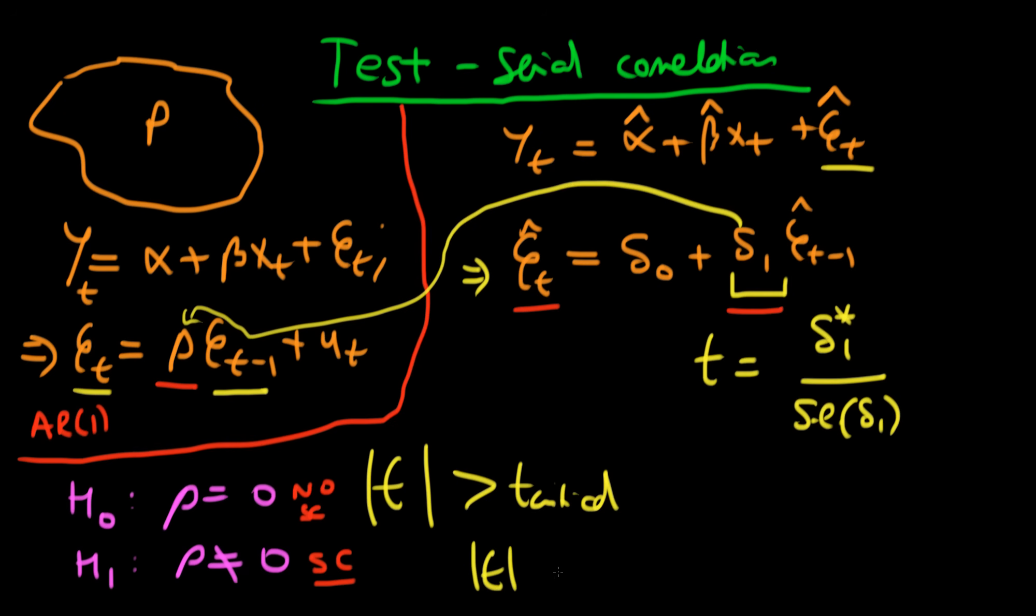If the magnitude of t is less than the critical value, then we do not reject the null hypothesis. This is one particular test for serial correlation in our errors.